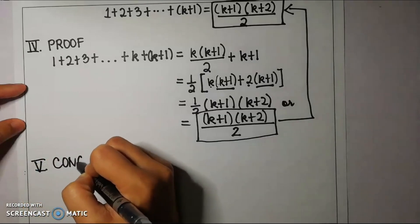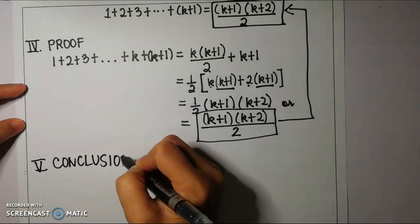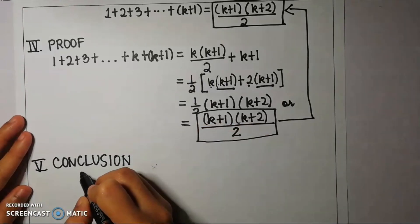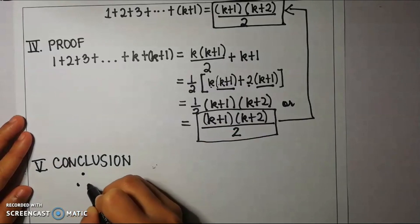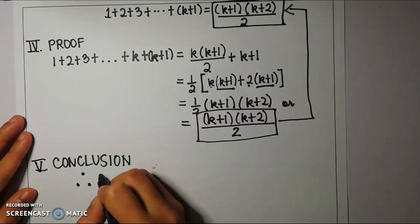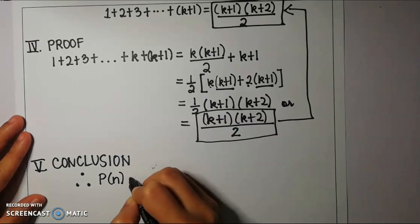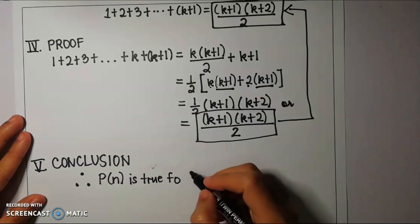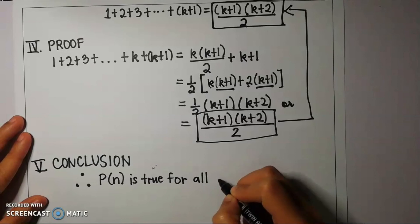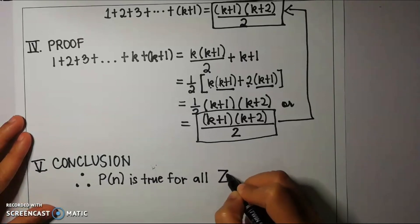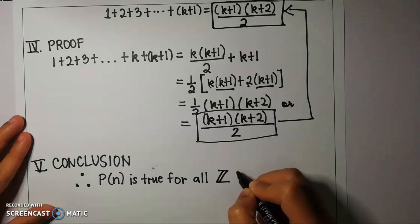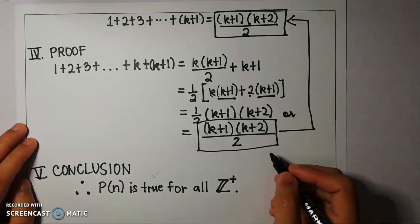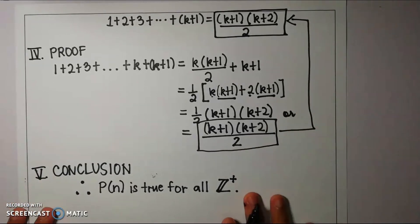For the conclusion, we state: Therefore, P(n) — that is, 1 plus 2 plus 3 plus ... plus n equals n times (n+1) over 2 — is true for all positive integers or natural numbers. That concludes the first example for mathematical induction.